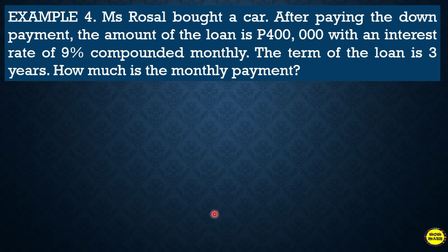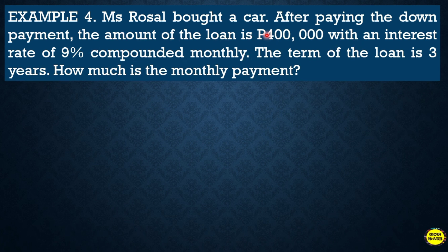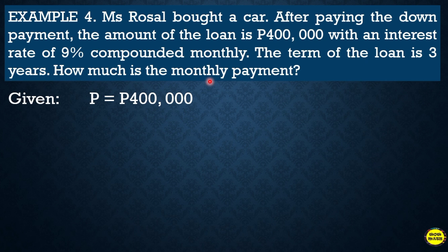Another example: Miss Rosal bought a car. After paying the down payment, the amount of the loan is four hundred thousand with an interest rate of nine percent compounded monthly. The term of the loan is three years. We need to find the monthly payment. The given values: principal amount is four hundred thousand, the nominal rate is 0.09, and n = 36 since it is monthly over three years (12 × 3 = 36).